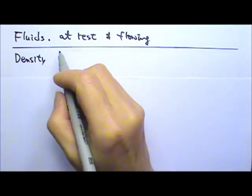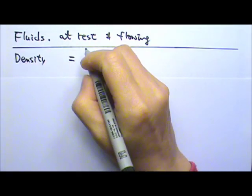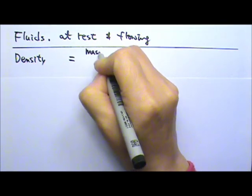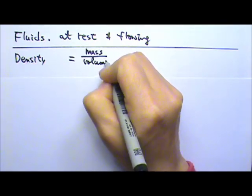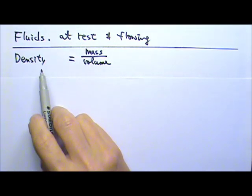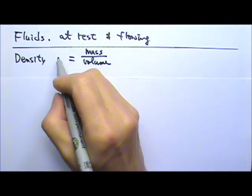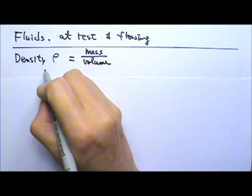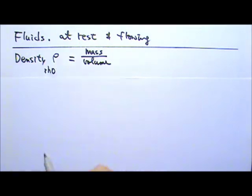Density. The definition for density is mass per volume. In chemistry, you probably use the D for density. But in physics, we use rho, the Greek letter rho for density.